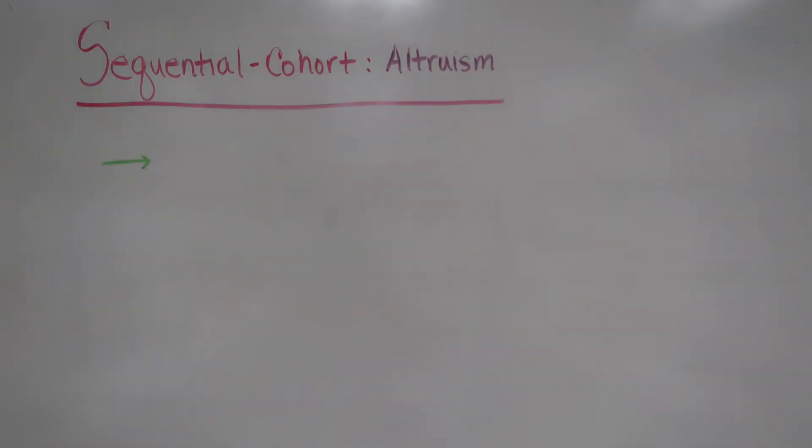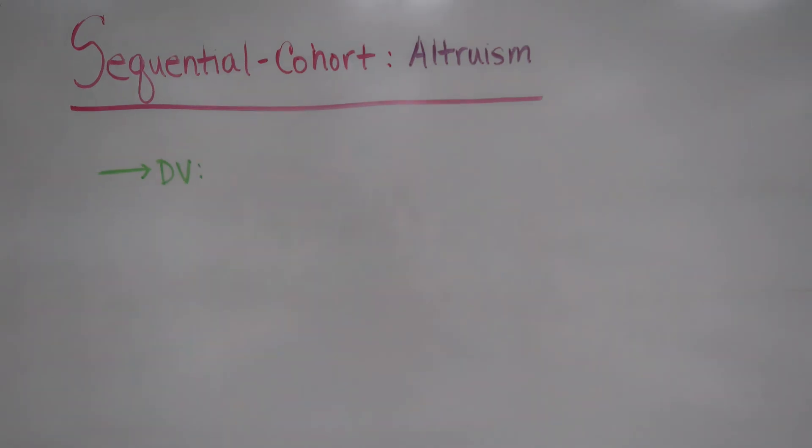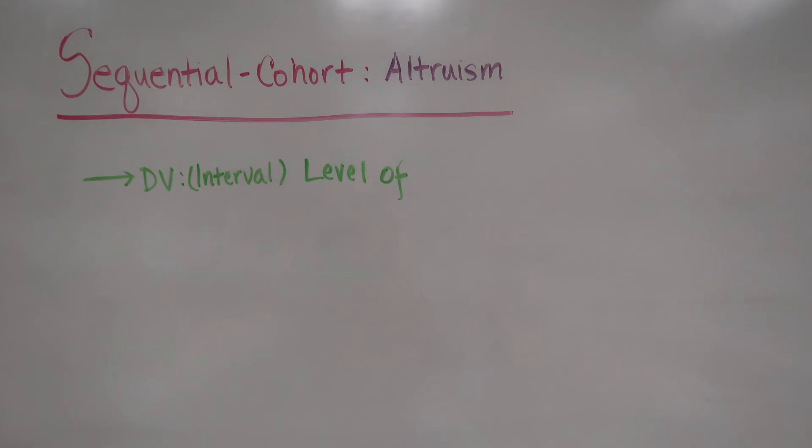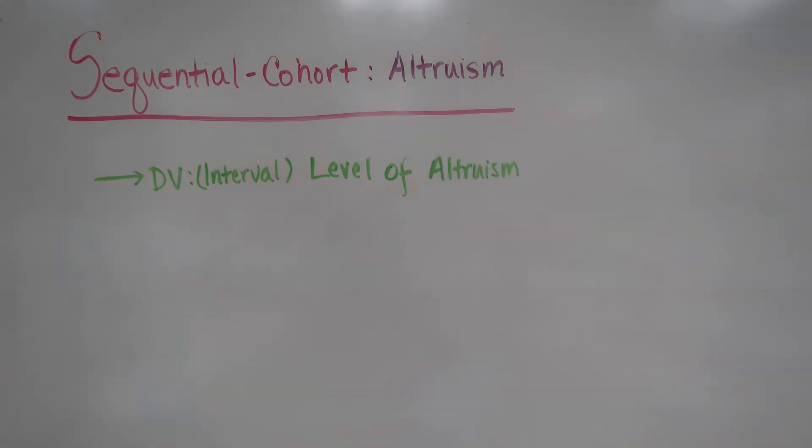The variables. Our dependent variable, which is interval, is the level of altruism on a variation of the Rushton, Christiane, and Feckin self-report altruism scale modified for adolescents.